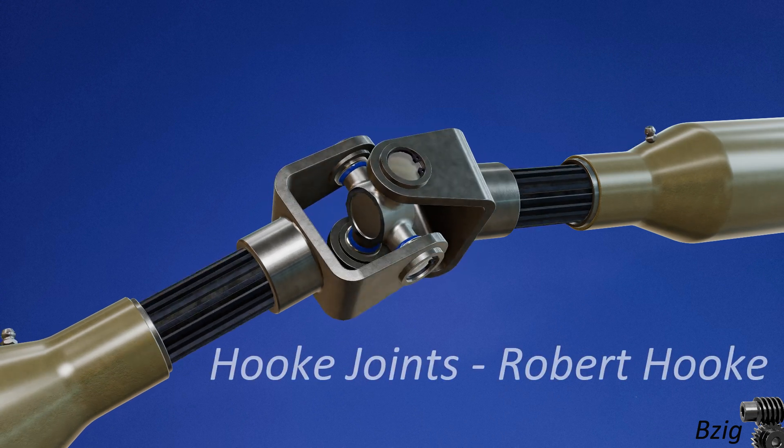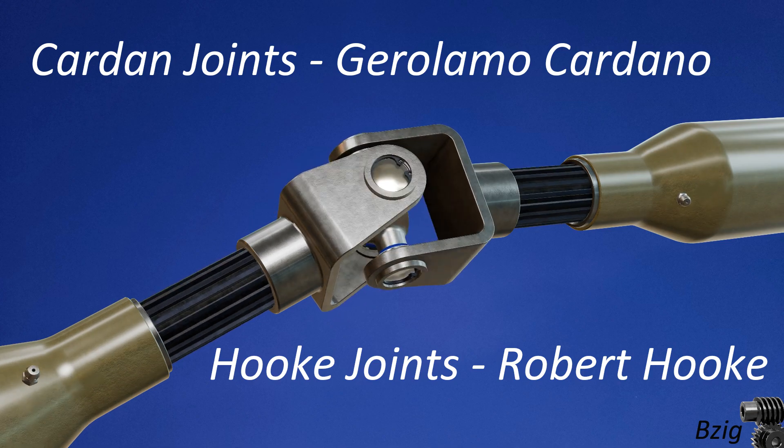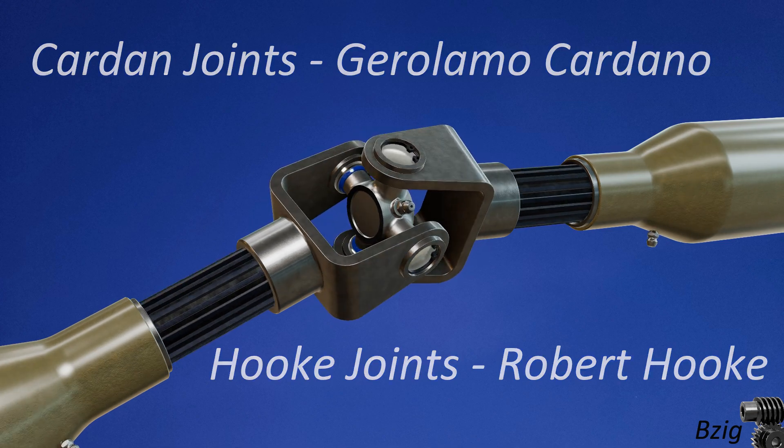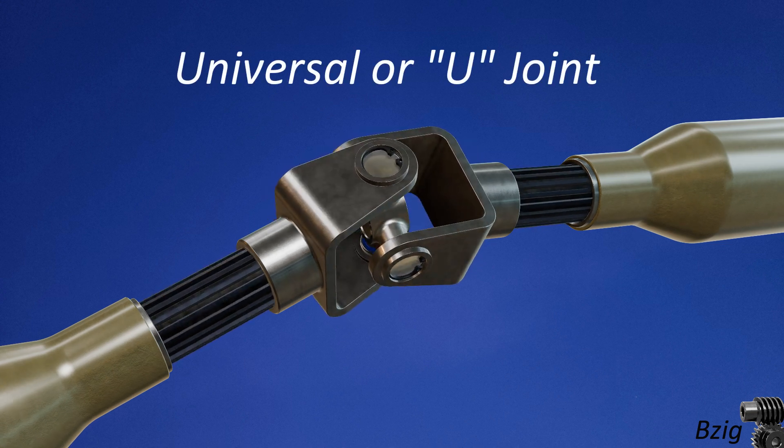These are alternately called hook joints or cardan joints, after the mathematicians who contributed to our knowledge of how these joints function. But if you'd like to buy one of these today, the common name is simply a universal joint, often abbreviated as a U-joint.